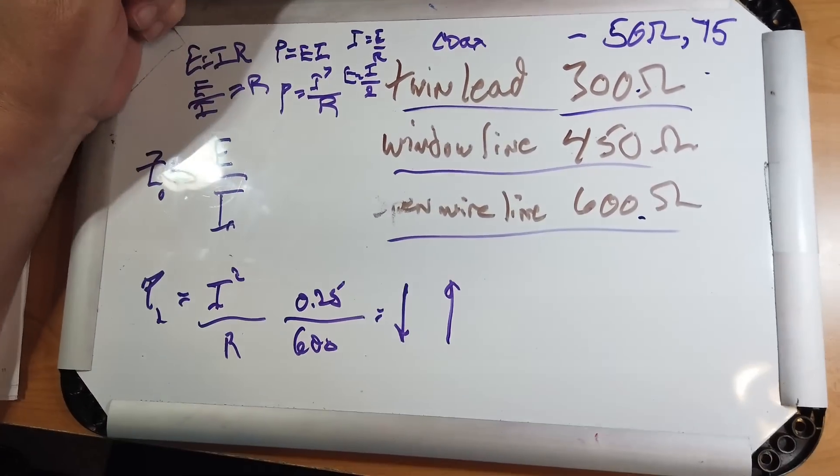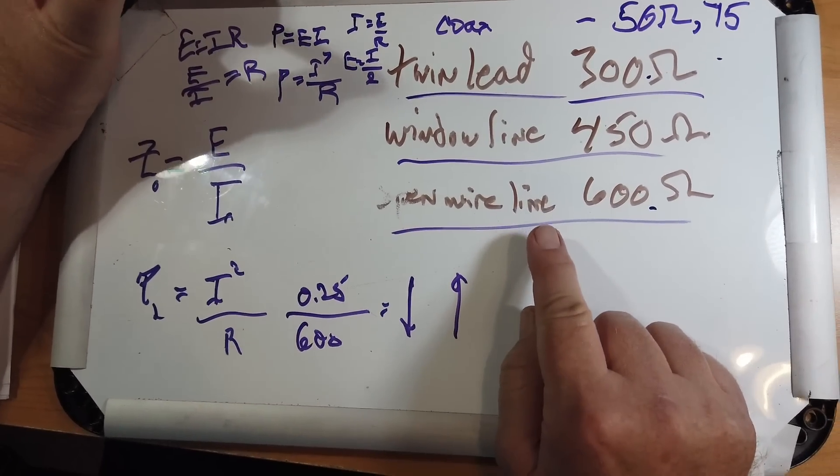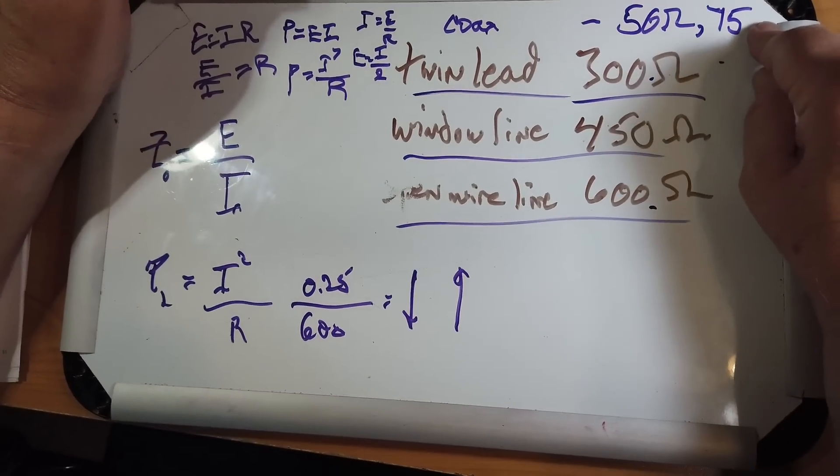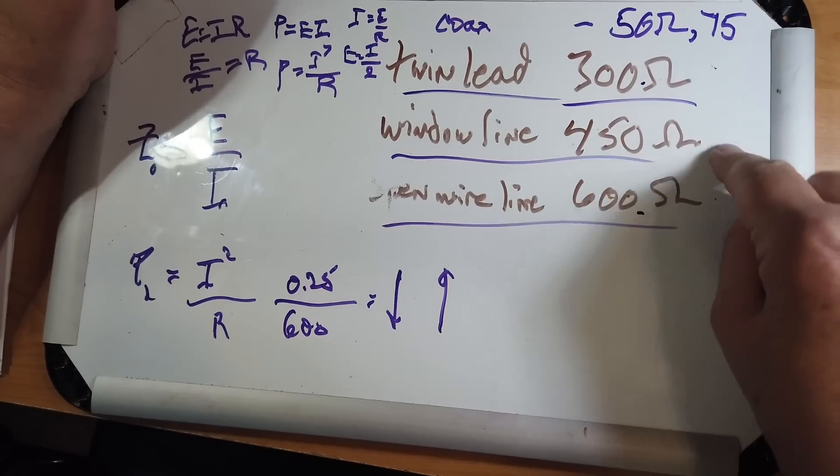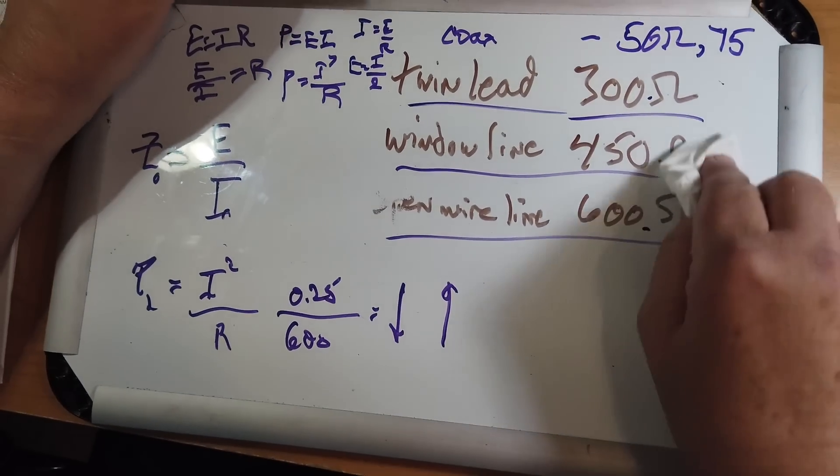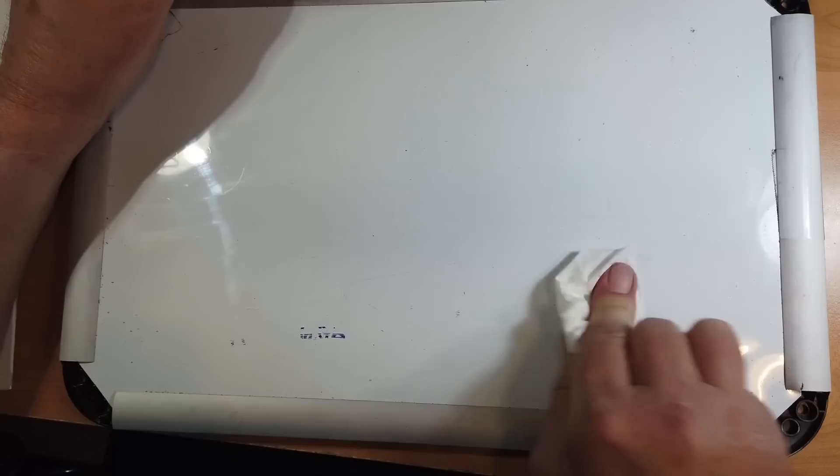That's very important because if you have a long line and coax might give you a higher loss than you would find acceptable, then you go to one of these solutions. Now, there is a problem.